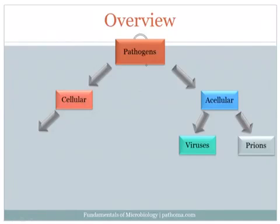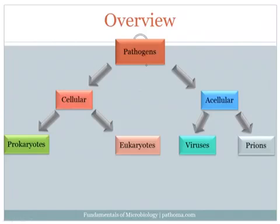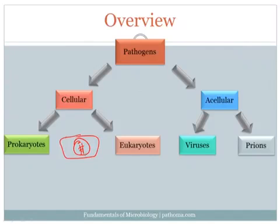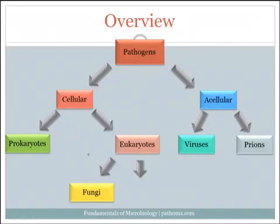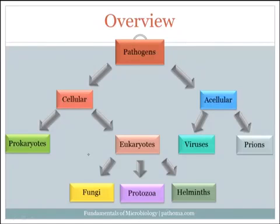We can further break down cellular pathogens into prokaryotes and eukaryotes. The fundamental difference is that prokaryotes do not have a membrane-bound nucleus — the structure that houses genetic information — and they also tend to be unicellular, whereas eukaryotes can be multicellular and are more complex. Examples of eukaryotes are fungi, protozoa, and helminths, and even humans fall under this category. An example of prokaryotes are bacteria, which we'll talk about today.